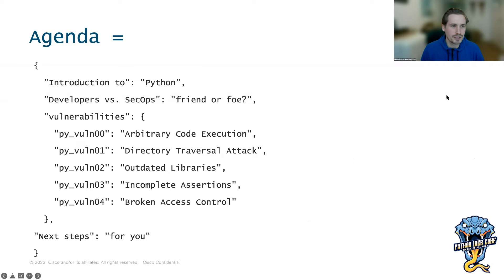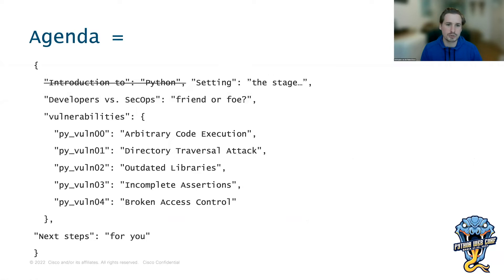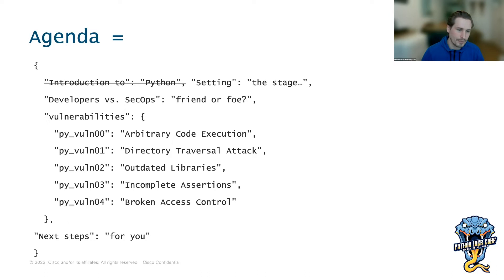So to start today, I have an agenda. This is not starting with an intro to Python, because I assume most people here know Python. I'm going to start with some small comments to set the stage, then talk about developers versus security or SecOps — are they friends or foes? Then we'll go through five different vulnerabilities. We'll end with broken access control, which might actually be more common than the other four. At the end, I have some final resources and things Cisco does which you might be interested in.